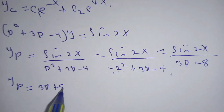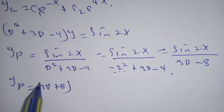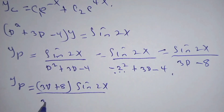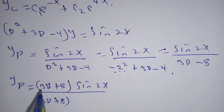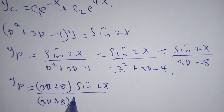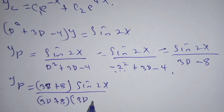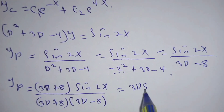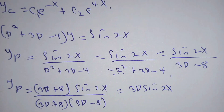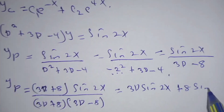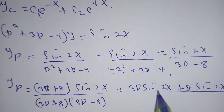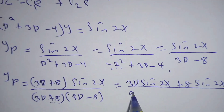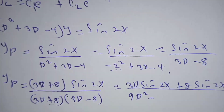To rationalize, we multiply numerator and denominator by (3D plus 8), so we don't change the equation. This gives us 3D·sin(2x) plus 8·sin(2x), all divided by (3D plus 8)(3D minus 8), which equals 9D squared minus 64 in the denominator.